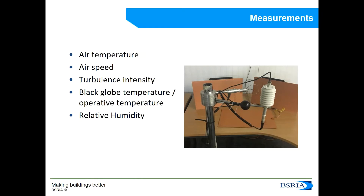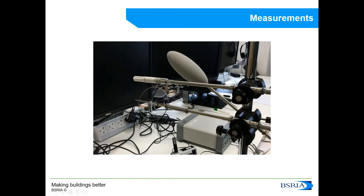To measure thermal comfort involves a little bit more than measuring the temperature and humidity, although these are two parameters that we have to measure. The other parameters that we have to measure are the airspeed, the turbulence intensity, and the globe temperature, as you can see here using a black globe. Or if you're not measuring the black globe temperature, you can measure the operative temperature using a sensor that looks like a microphone, and you can still obtain the thermal comfort indices. What you can see here in white is the humidity sensor, and there is also an anemometer with a metal shield to protect it, which measures the air temperature and airspeed as well.